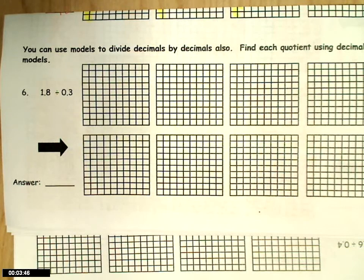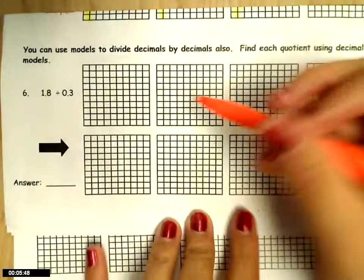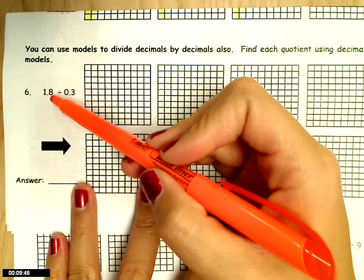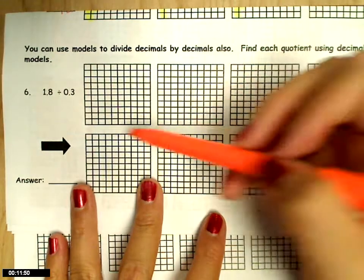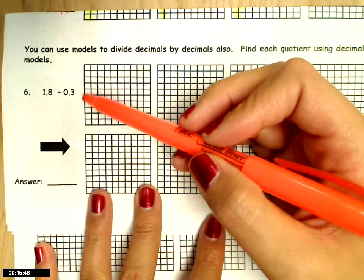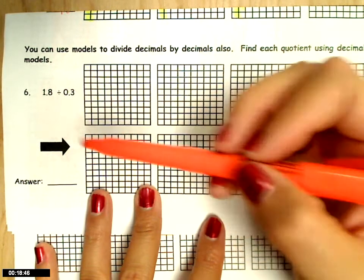Okay, now we still have dividing decimal models, but this one's different because we have my total that tells me how many I have to shade in. But then the second number, because it's a number smaller than 1, this number tells me how many are in each group.